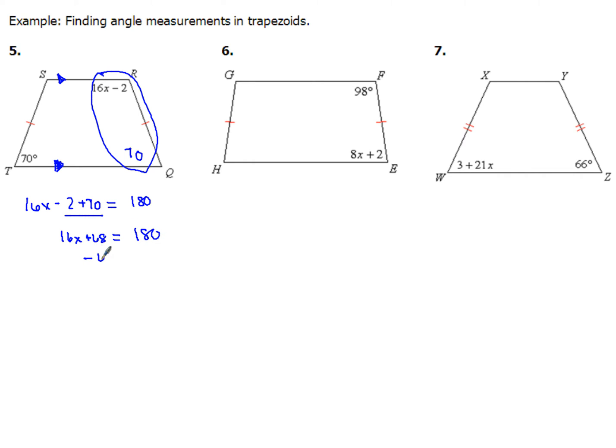Then when I subtract 68 on both sides, so this is just algebra and arithmetic from this point, I get 16x equals 112. Then when you divide both sides by 16, you end up with 7 for x.